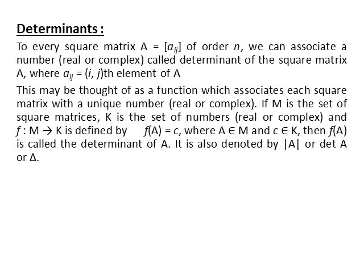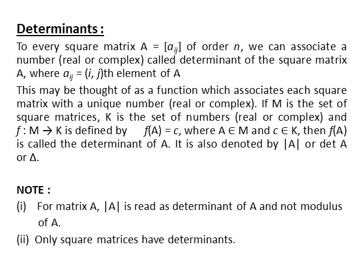These are the notations used for determinants. Most commonly we use A with vertical bars. For matrix A, |A| is read as determinant of A, not modulus of A. And always remember, only square matrices have determinants.